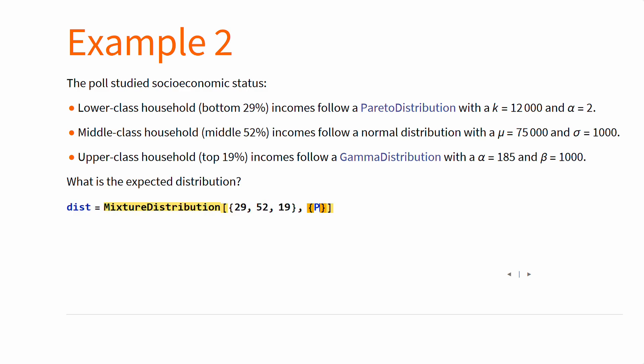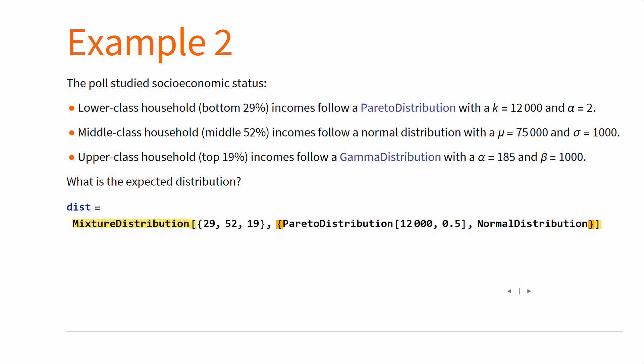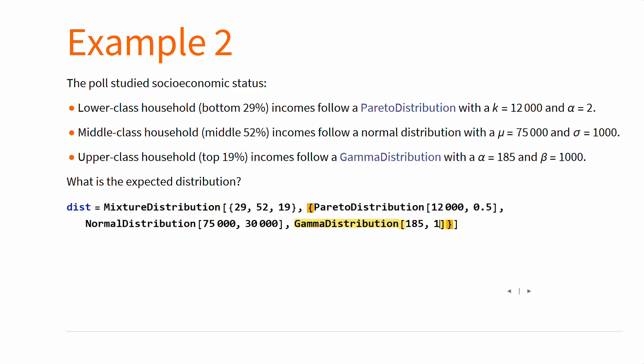Well, take the mixture over the percentages of the Pareto, normal, and gamma distributions, and you'll get the general household income distribution. To visualize, plot the distribution.